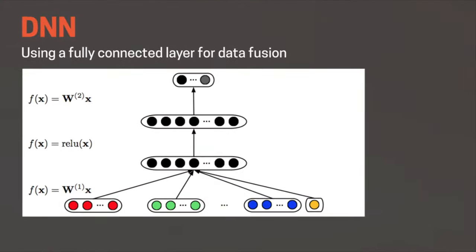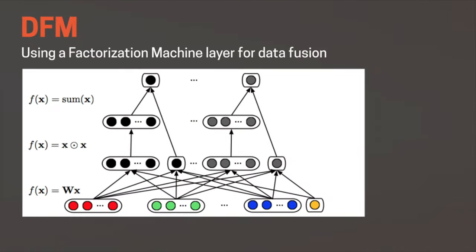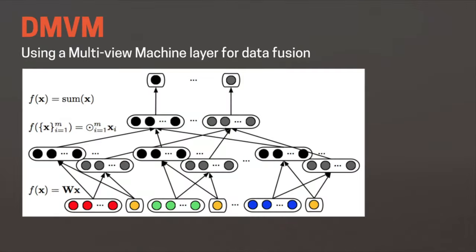The first fusion strategy is a conventional fully connected layer. The second is a factorization machine layer, where we write the FM in a feedforward manner so that it can be used in a deep framework. The third is a multi-view machine layer.